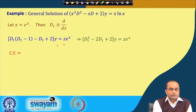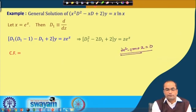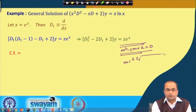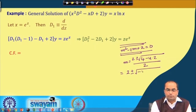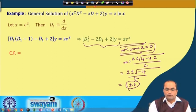For the complementary function, the auxiliary equation is m² - 2m + 2 = 0. The roots are m = [2 ± √(4-8)]/2 = [2 ± √(-4)]/2 = 1 ± i. So the roots of the auxiliary equation are 1 ± i, and the complementary function in terms of z is e^z(c₁ cos z + c₂ sin z).